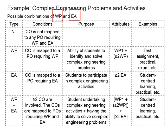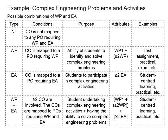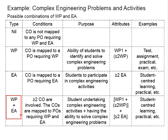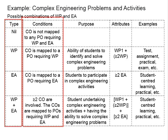First, let us look at the possible combinations of complex engineering problems and complex engineering activities. Since these two are separate components, there are four possible combinations. It is possible for a course to have no complex engineering problem and also no complex engineering activities. It is also possible to have only complex engineering problems or only complex engineering activities. Sometimes we do see courses having both. What are the circumstances that lead to these different combinations?